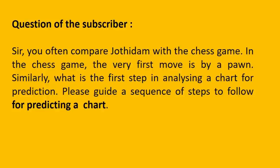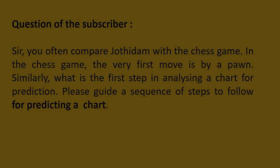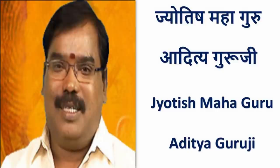In the chess game, the very first move is by a pawn. Similarly, what is the first step in analyzing a chart for prediction? Please guide a sequence of steps to follow for predicting a chart. In Jyotidam or astrology, first you have to check the status of Lagnaadhipati, that is the ascendant lord.